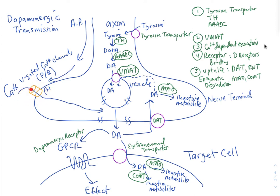Calcium comes in, triggers vesicle fusion, and exocytosis of dopamine. Receptor binding occurs through dopamine receptors, which are all GPCRs. There are different types of dopamine receptors coupled to different G proteins, but no dopamine receptors are ligand-gated ion channels, and this produces the biological effect.